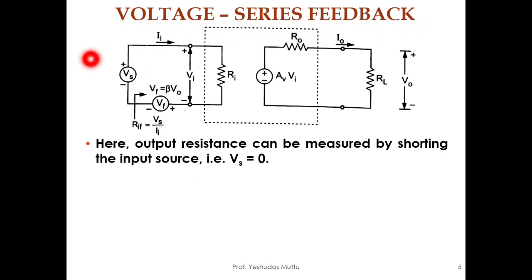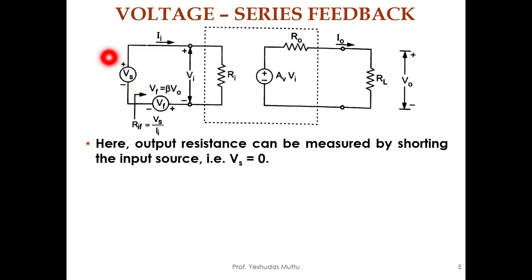Let me start with the first topology: voltage series feedback. This is the circuit diagram we usually consider for input resistance as well. Now, for output resistance we need to look from the output side. The first thing you need to do is short or open the input source. Since it is a voltage source Vs, it needs to be shorted.